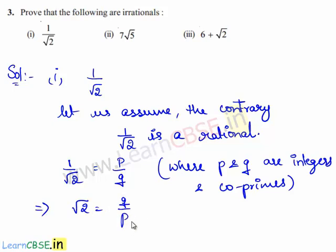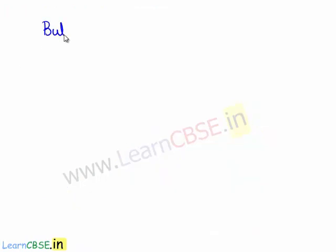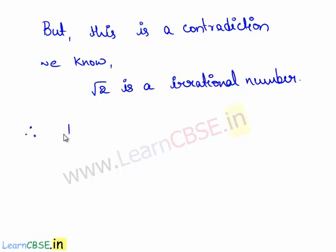Since q and p are integers, q upon p is a rational number. So this gives that root 2 is also a rational number. But this is a contradiction, because we know that root 2 is an irrational number. The obtained contradiction is due to our wrong assumption that 1 by root 2 is a rational number. Therefore, 1 by root 2 is an irrational number.